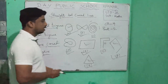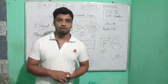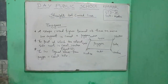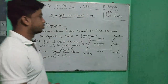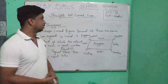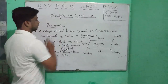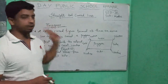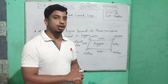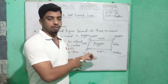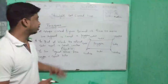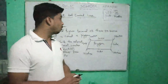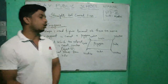Next we will learn about polygons. What is a polygon? A polygon is a simple closed figure. It is also a simple closed figure formed of three or more line segments — it is called a polygon.